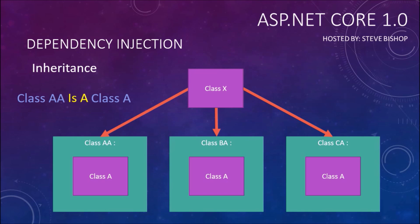So now class AA, BA, and CA — either you need to go into each one of those classes and fix the code, or you need to build a whole brand new set of classes to use class X. And then those new classes need to be used wherever you were using class AA, BA, and CA. You've got this whole tree, this branching out into all of the other classes that affect all the little nooks and crannies of your codebase — all potentially affected by this one little change from class A to class X.